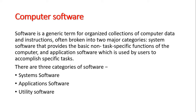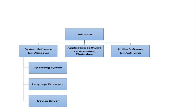Software is put into three categories: system software, application software, and utility software. That structure summarizes software in terms of those three categories.